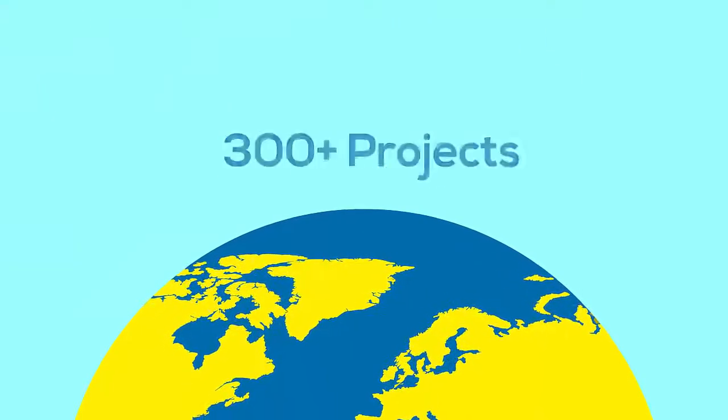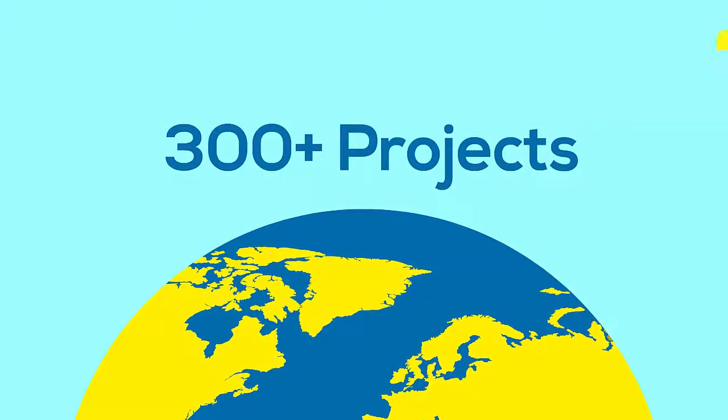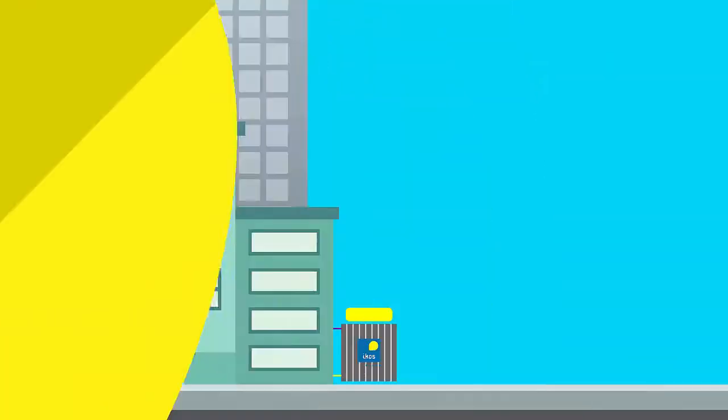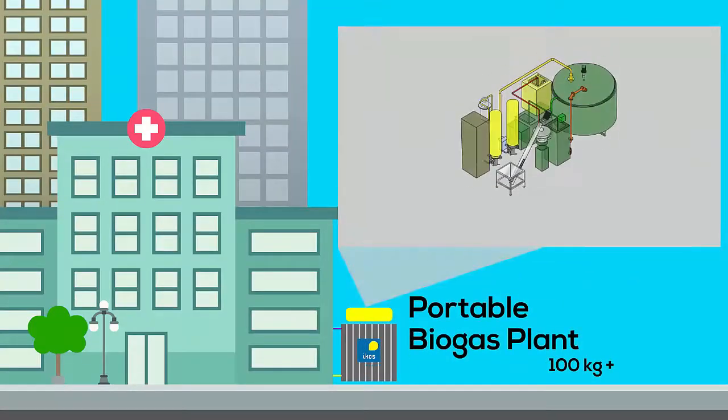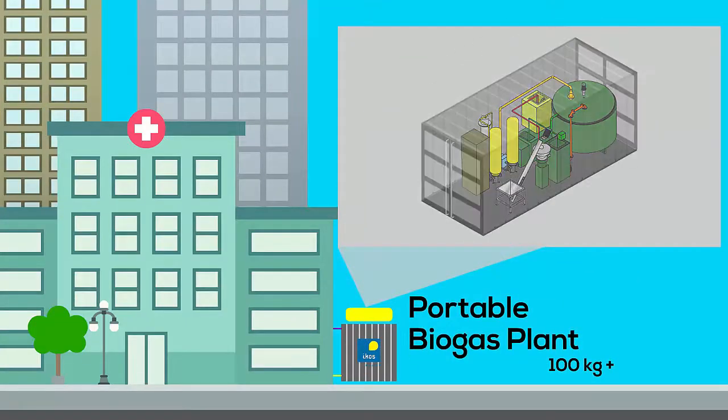Hemikos has an experience of setting up more than 300 biogas plants. We have portable biogas plants of capacity 100 kilograms and above to help manage segregated food waste at the source of generation itself.